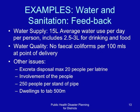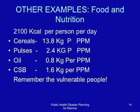Refer to your SPHERE standards manual with regard to food and nutrition. The standard is 2,100 kcal per person per day. With regard to cereals, approximately 14 kg per person per month is required. Pulses — such as beans and peas — require about 2.4 kg per person per month. Oil is 0.8 kg per person per month, and the Koyasan blend is about 1.6 kg per person per month. Remember to account for vulnerable people.